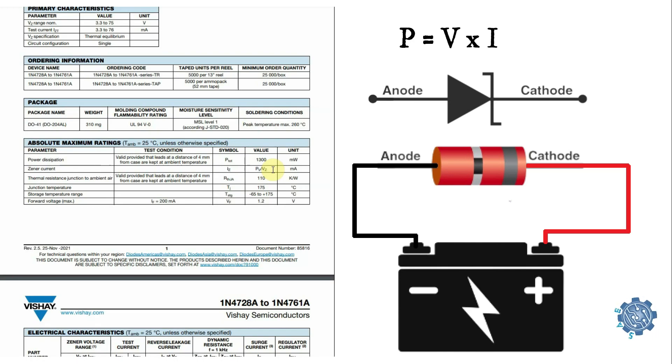The maximum Zener current is the maximum current that can flow through a Zener diode without damaging it. The maximum Zener current is also specified in the datasheet.